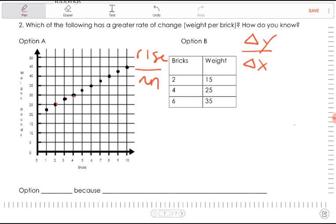So our change in Y, we're starting at 25 and we're going up to 30. Our change in Y then is 5. Okay so then what's our change in X? We're starting here at 2 and we're moving over to 4. So we have 5 here, we have 2 there. It's 5 pounds for every two bricks. That's the same as 2.5 pounds for every one brick.